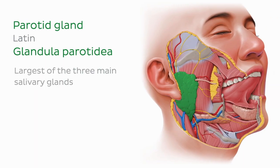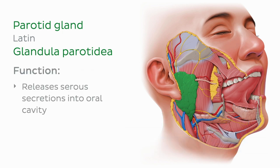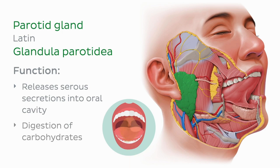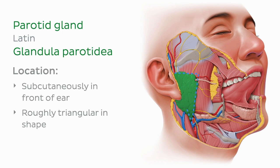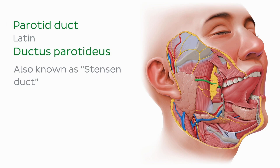The parotid gland is the largest of the three major salivary glands. It is a paired exocrine gland which releases serous secretions into the oral cavity — meaning the secretions are watery and rich in enzymes which play a role in digestion of carbohydrates. The gland is located subcutaneously in front of the ear and is roughly triangular in shape. It is divided into deep and superficial lobes, and its secretions drain into the oral cavity via the parotid duct, also known as the Stenson duct, which can be about 5 to 7 centimetres long.